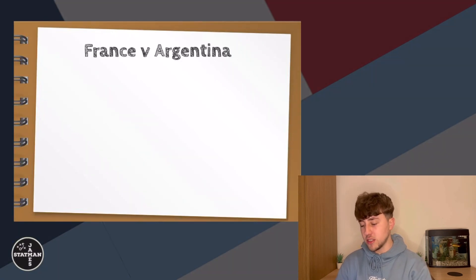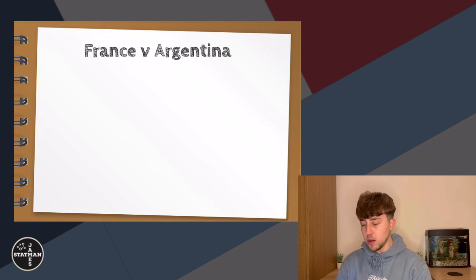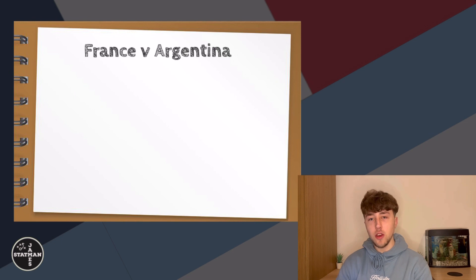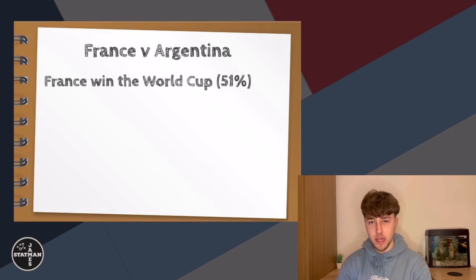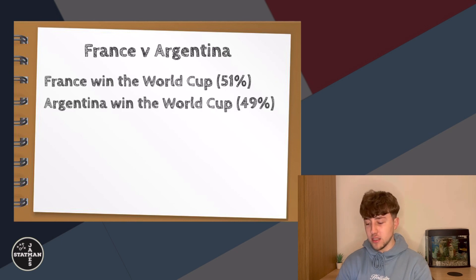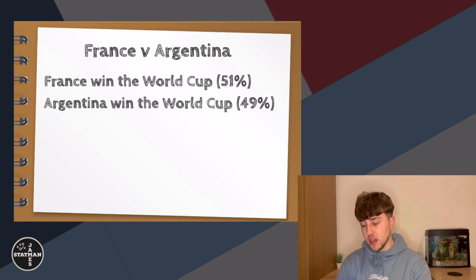The results and calculations cover both teams' chances of winning the World Cup, the most likely scoreline, and the 90th minute result. France come in with a 51% chance, winning the World Cup in 50,983 of the 100,000 simulations. Argentina are second with a marginal 49% chance, so it's clear to see how close this game is going to be.